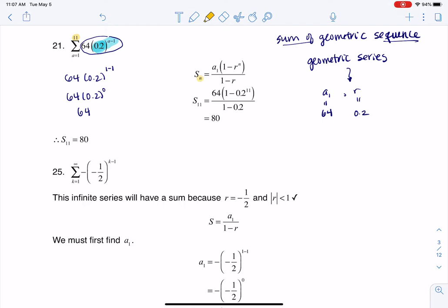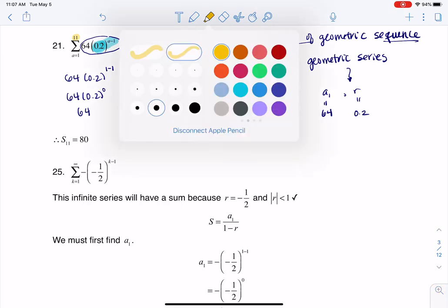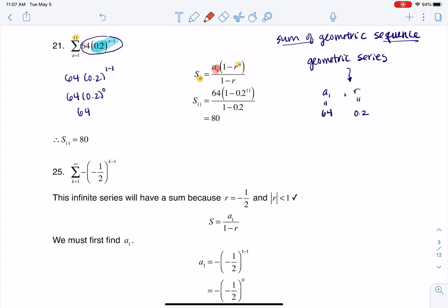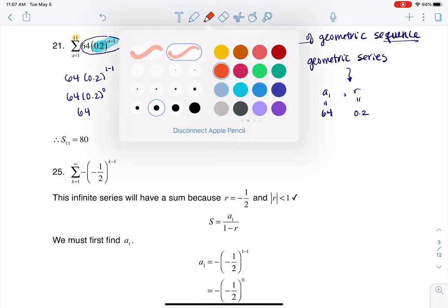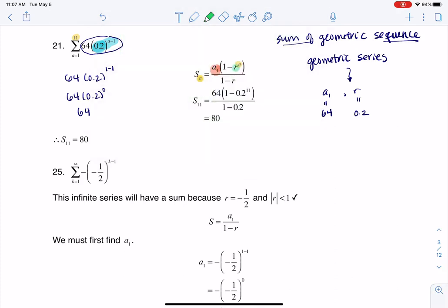I'm going to use that s sub n geometric series formula, and I'm going to plug in n being 11, and I'll put the 11 here. And then I'll plug a sub 1 being 64, I'll put the 64 here, and then for r being 0.2, I'll put that here and here, and you can see me crunching that number.